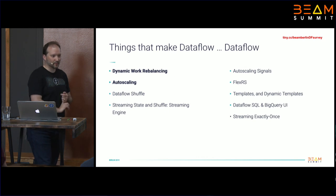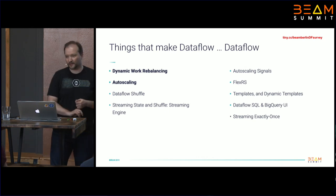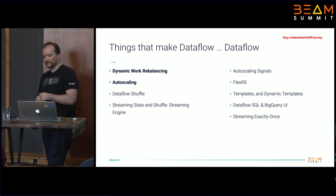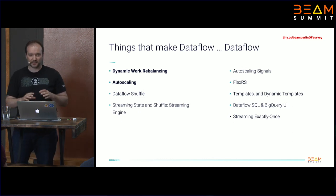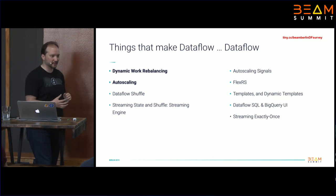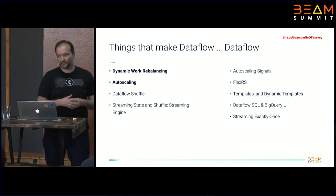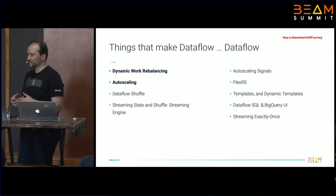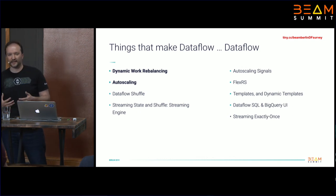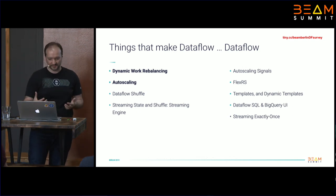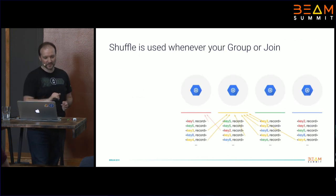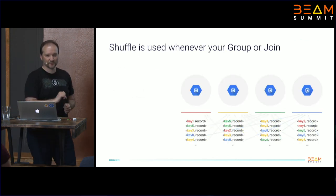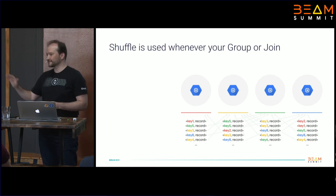Now let's talk about state — starting with state in batch, and then covering state in streaming. State in batch is represented through a feature we call Dataflow Shuffle. To explain what Dataflow Shuffle is, I need to explain what Shuffle is. Whenever you use groupings or joins in distributed data processing, you need to collocate all of your key-value pairs on the same worker responsible for a particular key. This process is called shuffling — you send lots of data around until key-value pairs are collocated on the same worker.